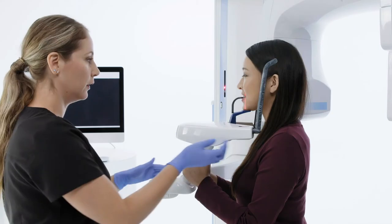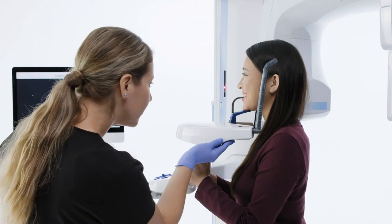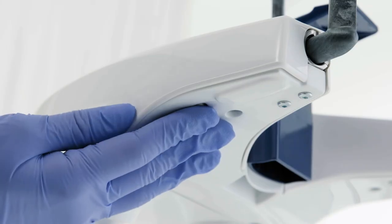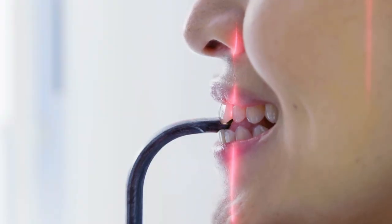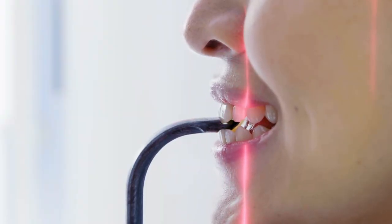While standing to the left of the patient, roll the thumb wheel to position the layer light in the interproximal space between the cuspid and the lateral incisor. The layer light represents the middle of the focal trough.